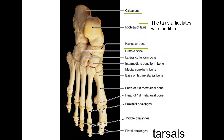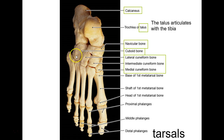The tibia is the main weight-bearing bone, so if you broke your fibula you could probably hobble out because most weight goes through the tibia. The navicular bone is shaped like a little canoe — 'navicular' comes from the same root as 'navy,' meaning boat. The cuboid bone looks like a cube.